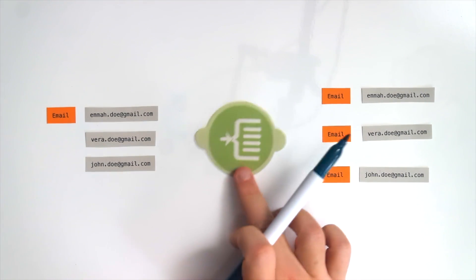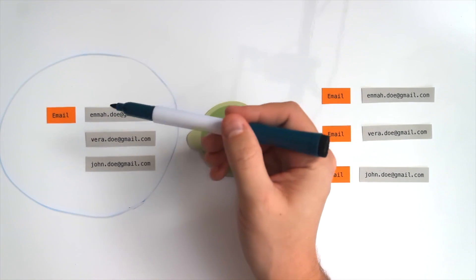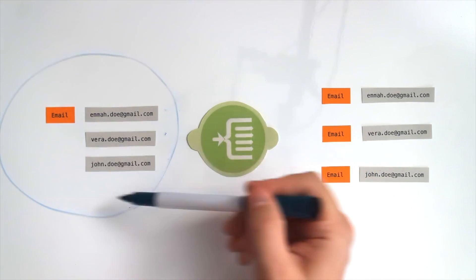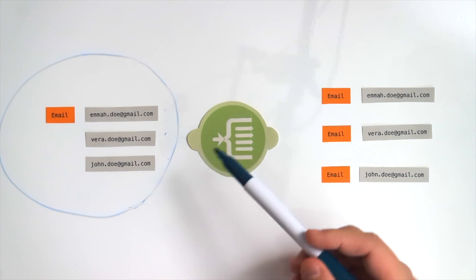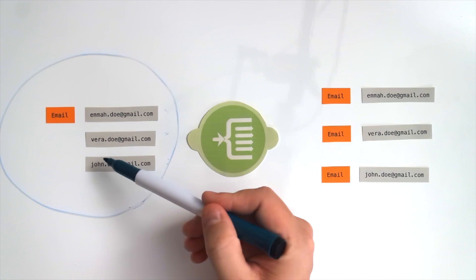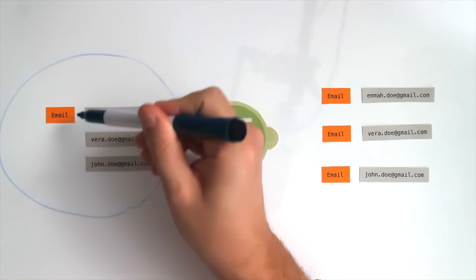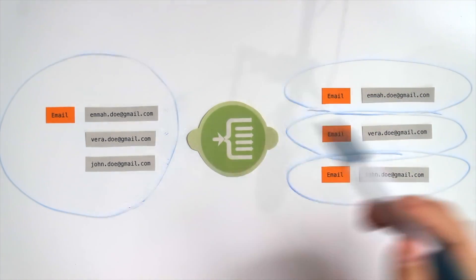With the iterator, you can split arrays into multiple bundles of data so that you can process each of them separately. In Integromat, we have a bundle of data with an array in it. An array is basically a special type of item — for example, an email array with multiple values in it. The iterator splits the items of this array into multiple bundles of data. It sounds maybe really tricky, but it's actually really simple. Let's dive into Integromat and show you how it works.